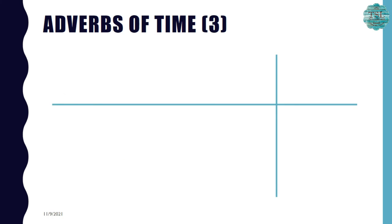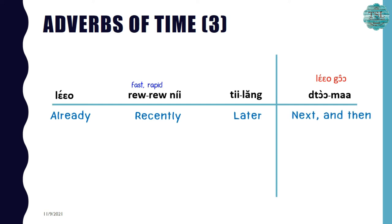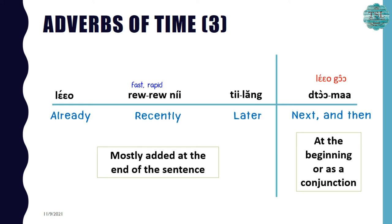Now let's learn adverbs of time, set 3. The first one is แล้ว. The second one is เร็วๆนี้. The word เร็ว means 'fast' or 'rapid,' so เร็วๆนี้ can mean 'recently' or 'soon.' The third one is ทีหลัง, which means 'later.' The fourth one is ต่อมา or แล้วก็ as a conjunction. The first three are mostly added at the end of the sentence, while the last two are added at the beginning or used as a conjunction.